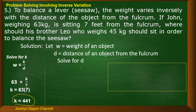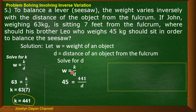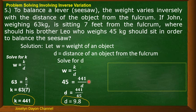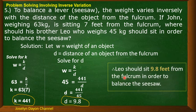Next, solve for D using the same equation W = k/D. Use Leo's weight of 45 kg: 45 = 441/D. Solve for D: D = 441/45 = 9.8. Do not forget to include the unit in your conclusion — the unit used in the problem is feet. Therefore, Leo should sit 9.8 feet from the fulcrum in order to balance the seesaw.